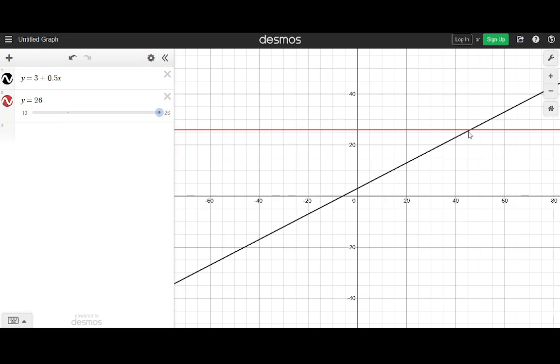Now if I want to find where they intersect, if I click on one of them, notice that it highlights that point, 46, 26. And that, just like on the calculator, tells me that when the amount reaches 26, that's at the time value 46. So just like with the calculator, you can see where two lines intersect like that. So that's one thing we did.